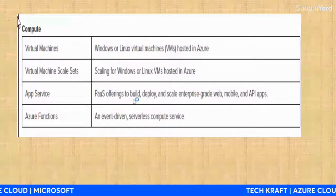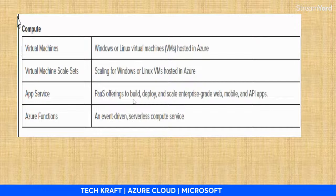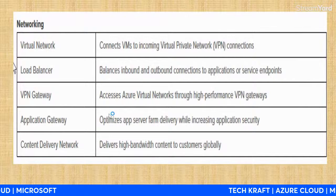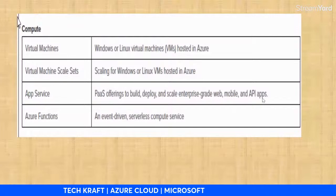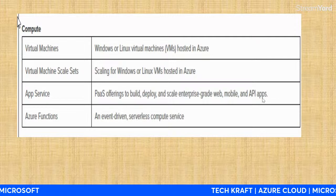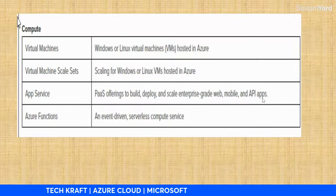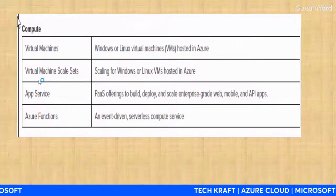App Service is a compute engine feature. It's a Platform as a Service offering to build, deploy, and scale enterprise-grade web, mobile, and API apps. Because of the compute engine, you can build an application on your laptop, deploy it, and manage resources — adding or removing them based on your requirement.